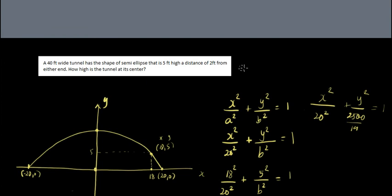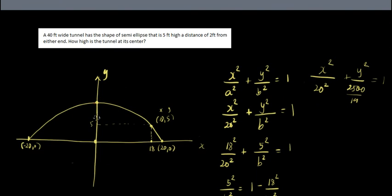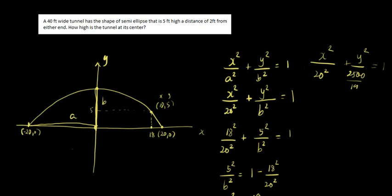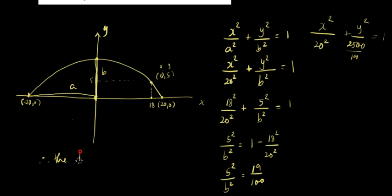Now, but the question is, how high is the tunnel at the center? So we will basically solve for this. And this is the value of b. So for the value of b, we're going to get the square root of 2,500. So b equals plus or minus but we will just take the plus sign. So that's 50 square root of 19 over 19. And this is approximately 11.47 feet. Therefore, the tunnel is approximately 11.47 feet from the center.